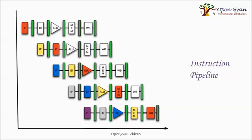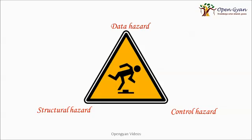Hey, but there is a small problem in this. As you can see here in the instruction pipelining, there are three types of hazards: the data hazard, the structural hazard, and the control hazard.